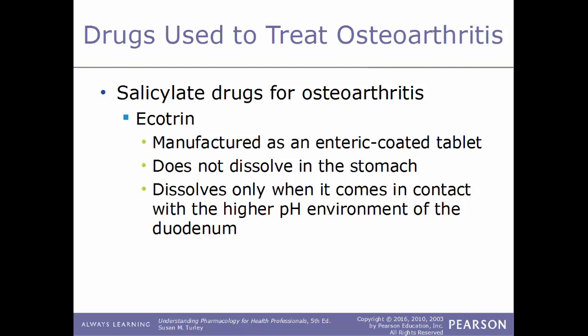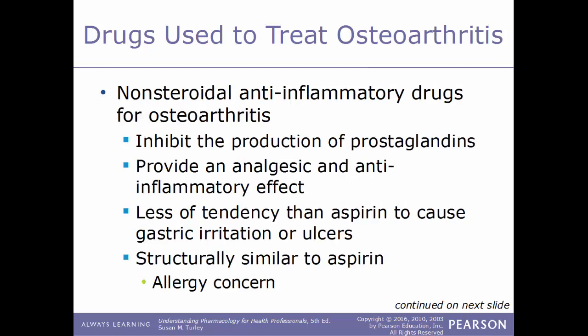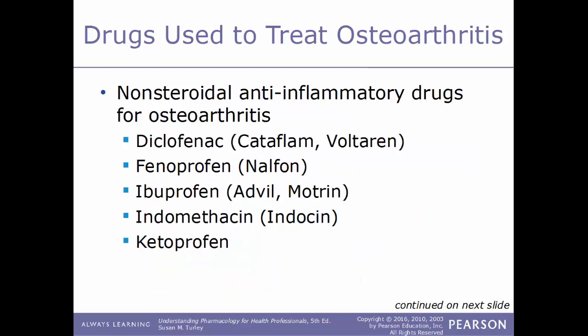The enteric-coated tablet dissolves only when it contacts the higher pH environment of the duodenum, which is the very first part of the small intestine. Another type of drug used to treat osteoarthritis are the NSAIDs — nonsteroidal anti-inflammatory drugs. These inhibit the production of prostaglandins, providing both analgesic and anti-inflammatory effects. They have less tendency than aspirin to cause gastric irritation or ulcers. However, since they are structurally very similar to aspirin, patients allergic to aspirin will most likely also be allergic to NSAIDs.